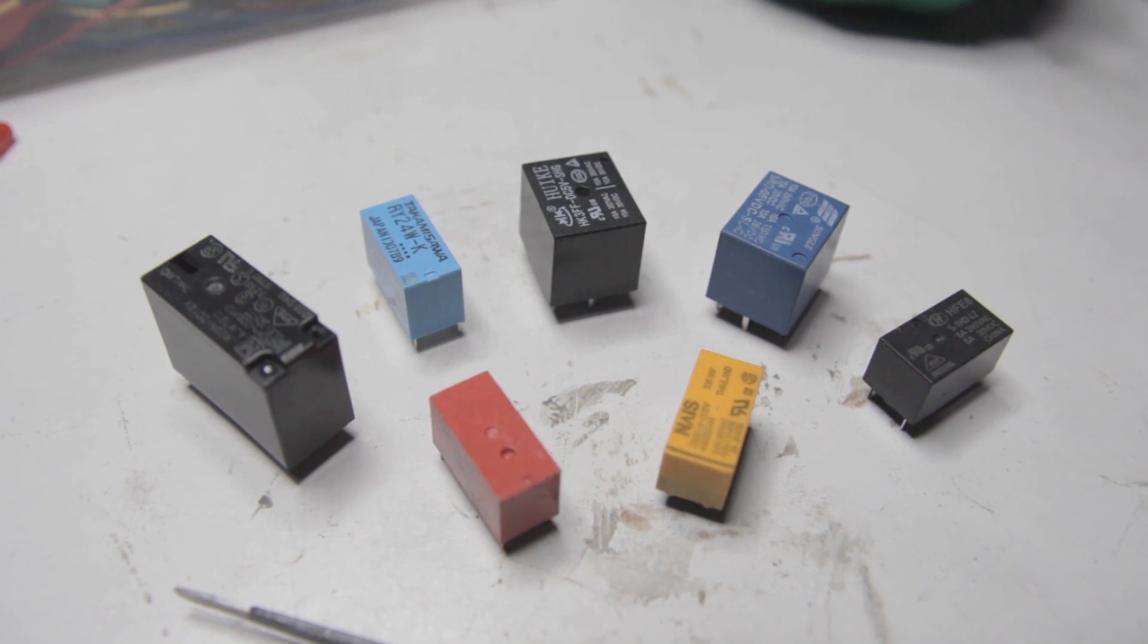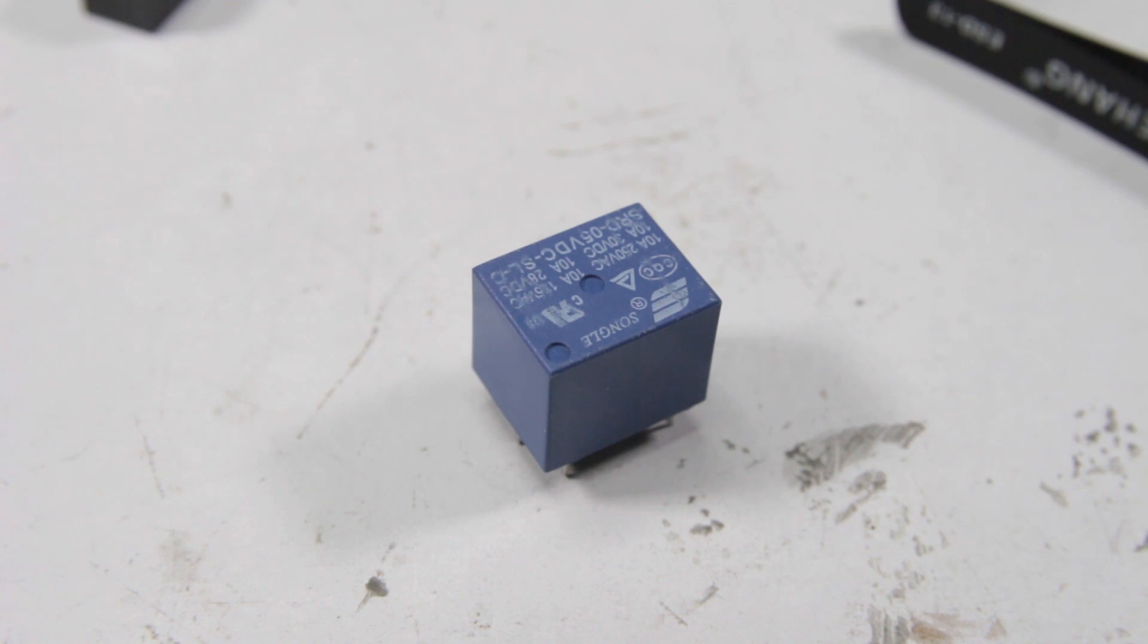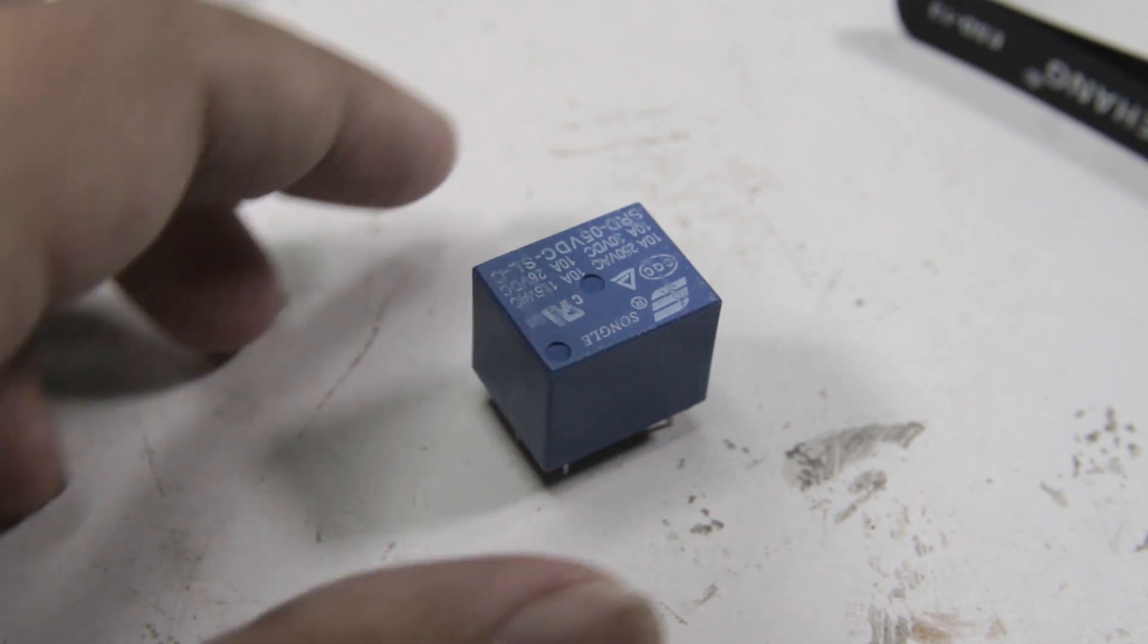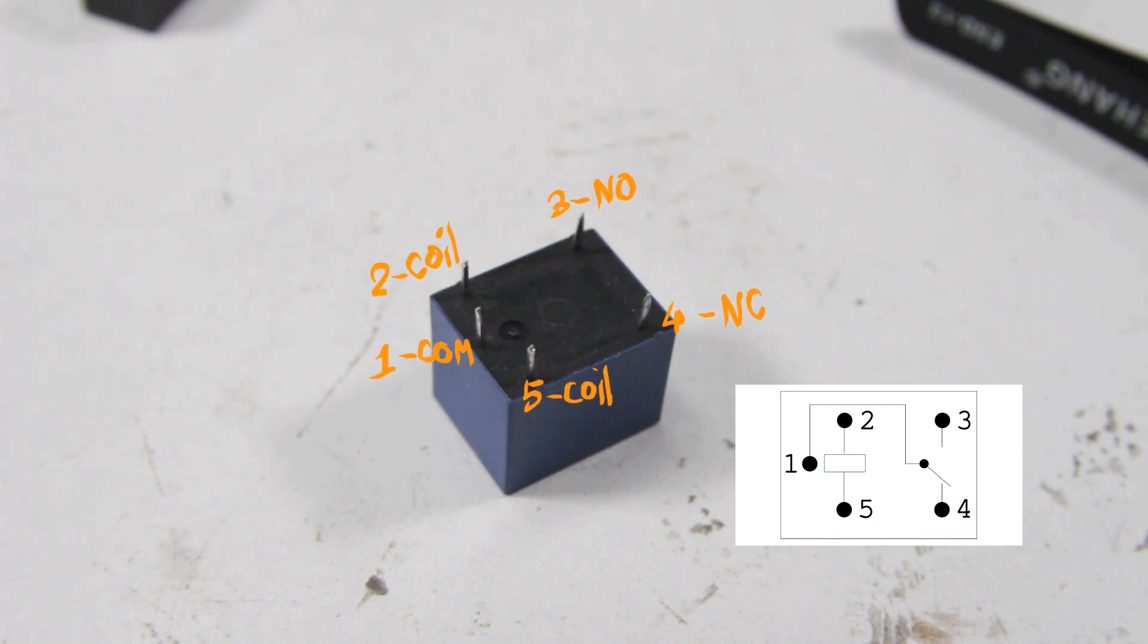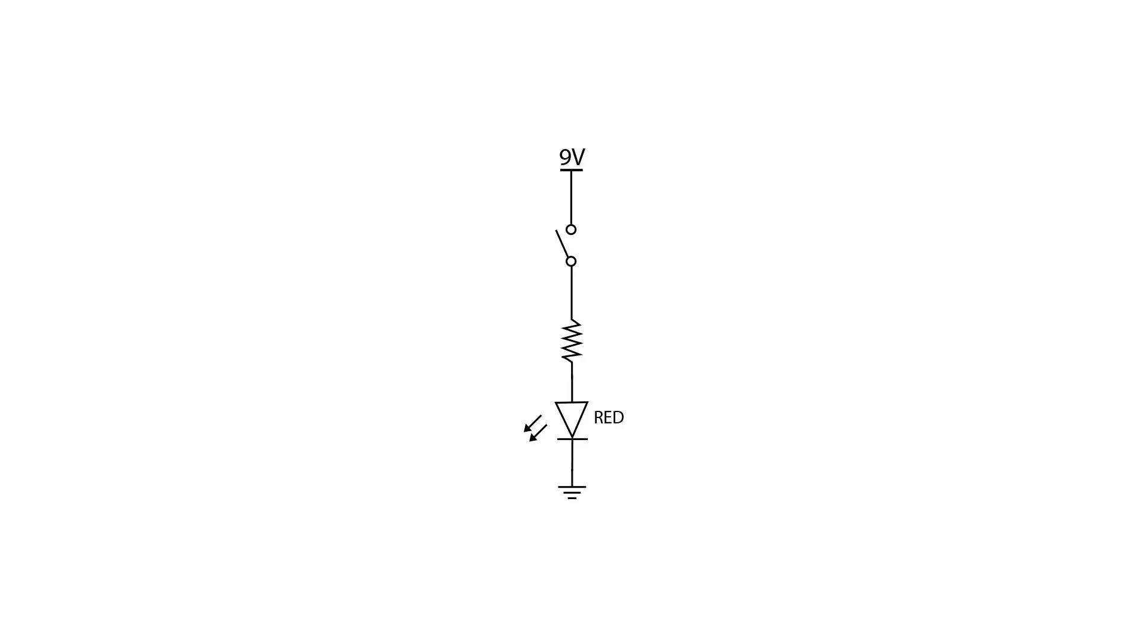These two types of relay can look really similar, so make sure you get the correct type for your application. Now I'll show you how to connect up this 5-volt, 5-pin SPDT relay. From the datasheet, this is how the pins are laid out. Let's say I want to replace the switch in this simple LED circuit with the relay. What I do is connect the common pin to the 9 volts and connect the normally open pin to the resistor and the anode of the LED.